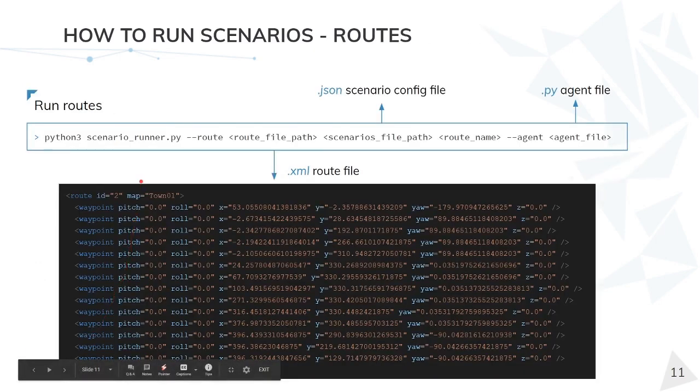Scenarios can also be run inside routes. In this case, the agent is guided throughout the town, following a specific path. Routes introduce the ability to run multiple scenarios during the same simulation. Therefore, these scenarios now have a trigger position and are activated once the ego vehicle is nearby.